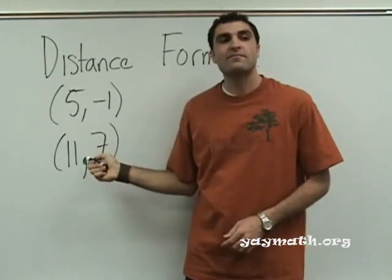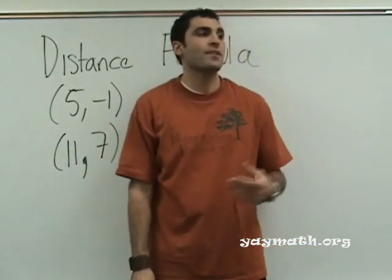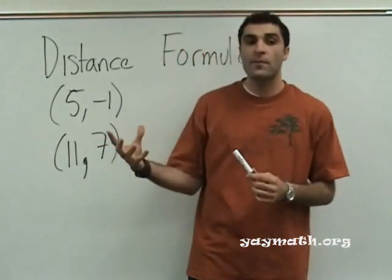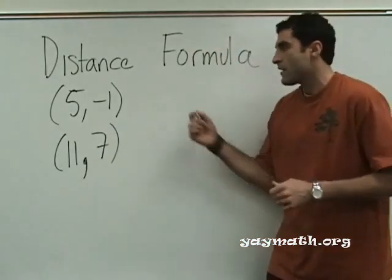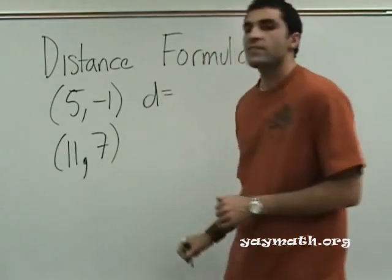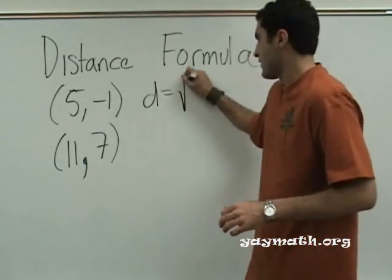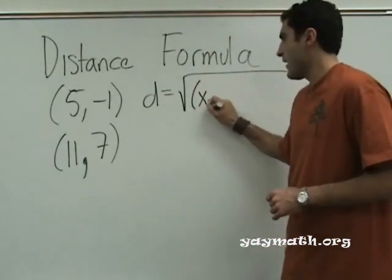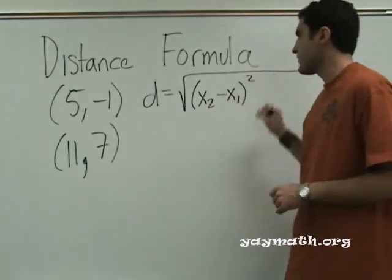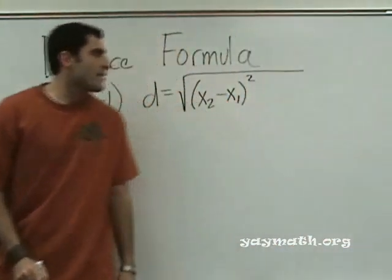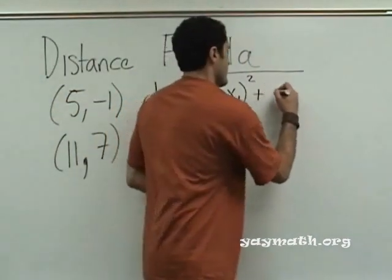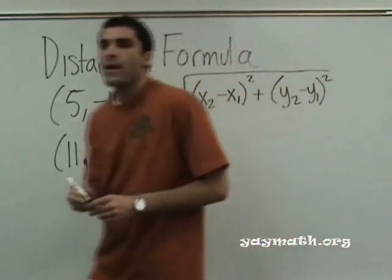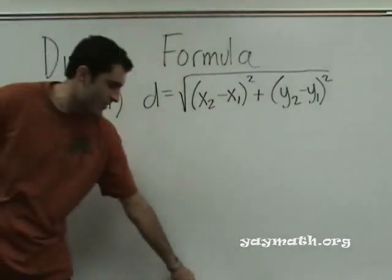These are two points. What is the distance between these two points? We could graph it and find the distance, but there's a formula to find the distance between. The formula goes like this: D equals, D stands for distance. A long square root sign. x2 minus x1 squared plus y2 minus y1 squared. Let's explain what these are.